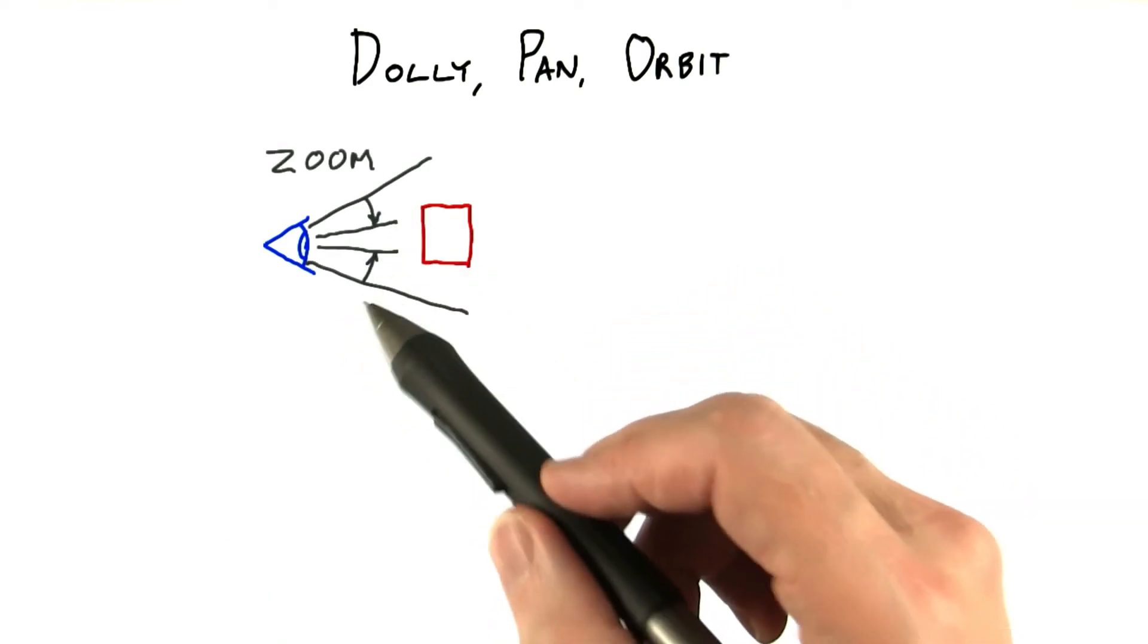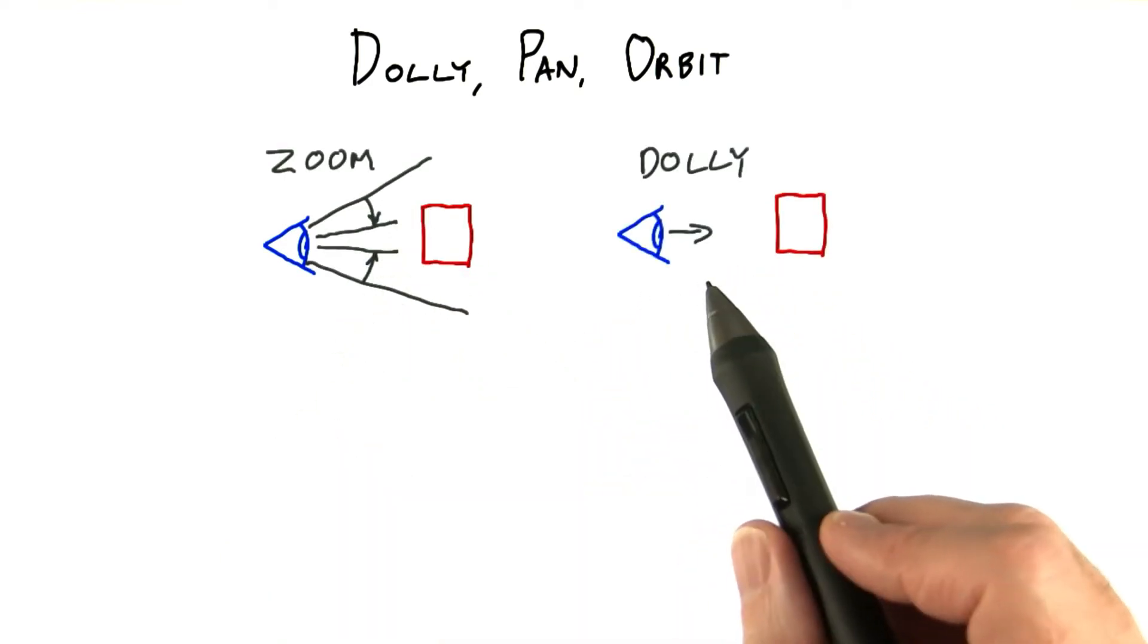When you adjust the field of view, that's zoom. When you move directly towards or away from an object you're looking at, that's dollying.